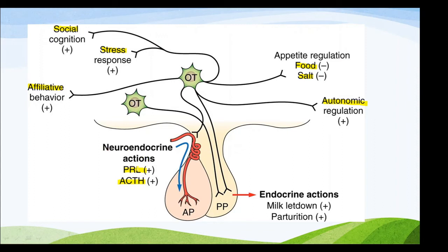Oxytocin has two major functions. One is the neuroendocrine actions — it activates prolactin and ACTH production from the anterior pituitary. The endocrine actions of oxytocin allow milk letdown and parturition, both involved with lactation of the mother.